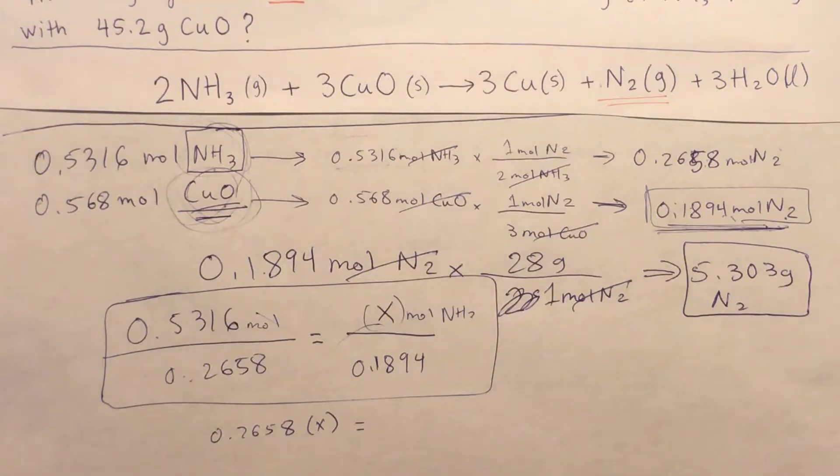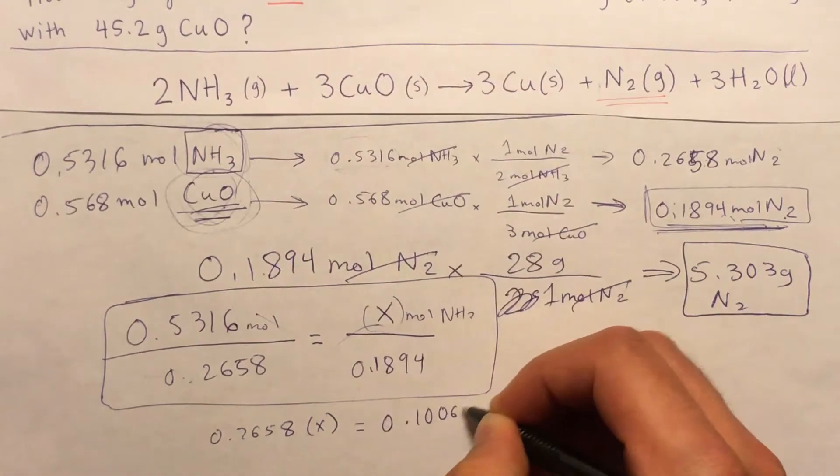And then using the calculator, 0.5316 times 0.1894, and then we divide by, so this is 0.100685.